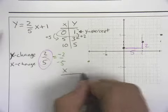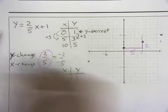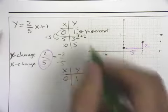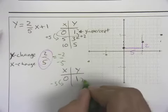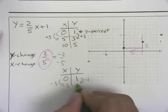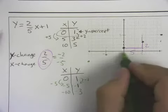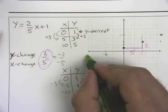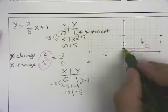I'll bet these points are the same points that we would get if we started back at that y-intercept, 0, 1. Instead of going plus by 5 and plus by 2, we went minus by 5 and minus by 2. If we did that, we'd have negative 5 and negative 1. If we did it again, we'd have negative 10 and negative 3.